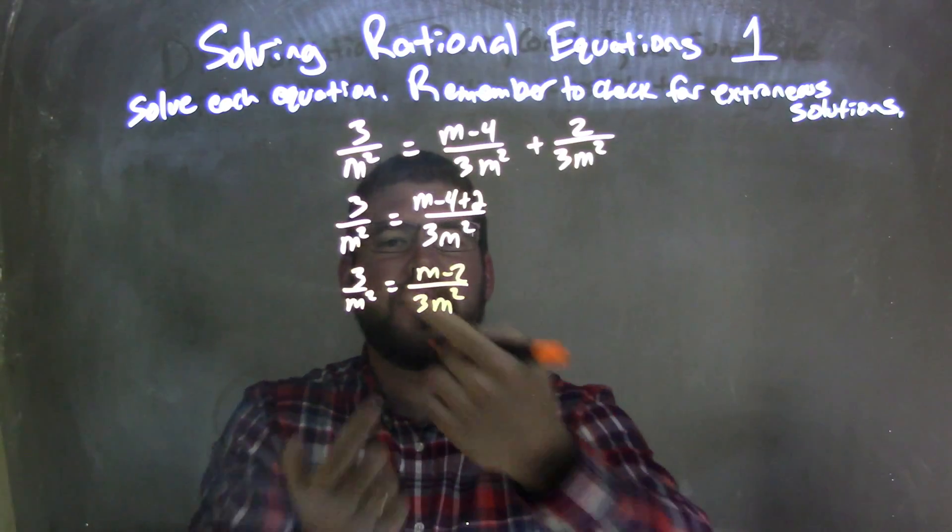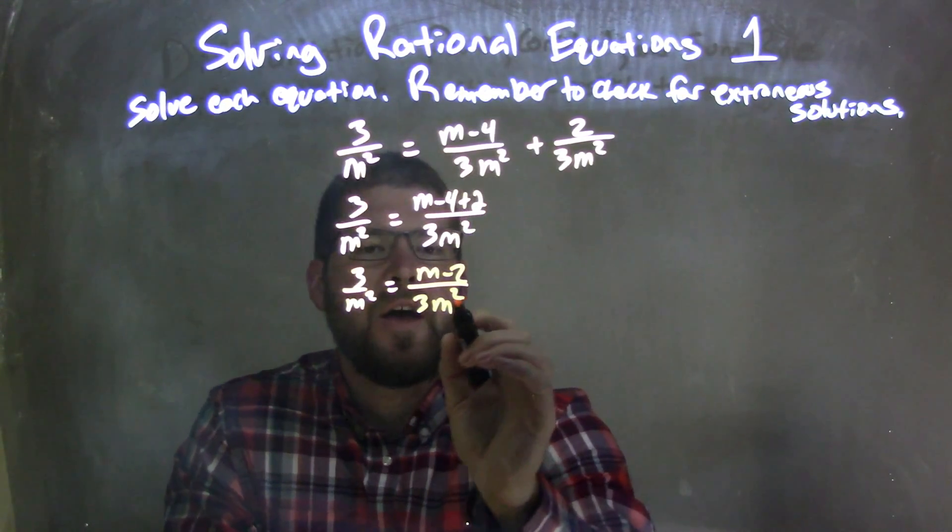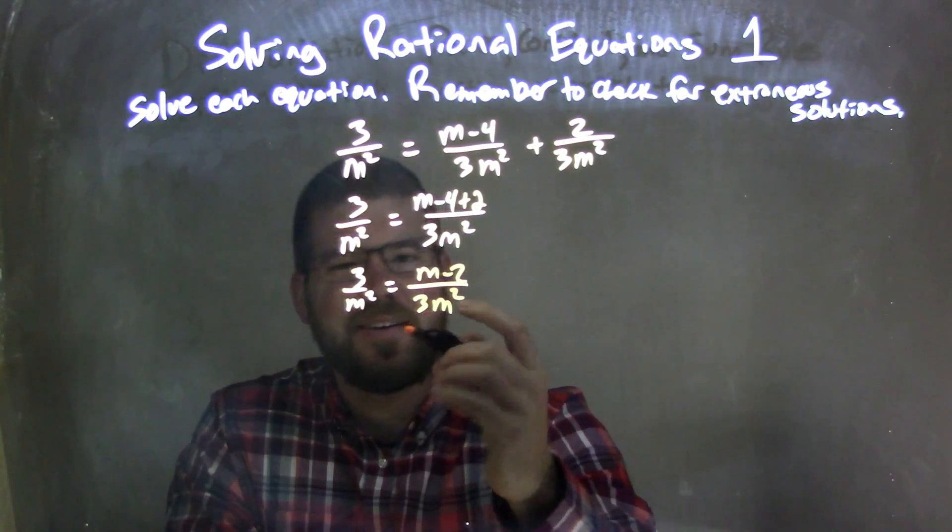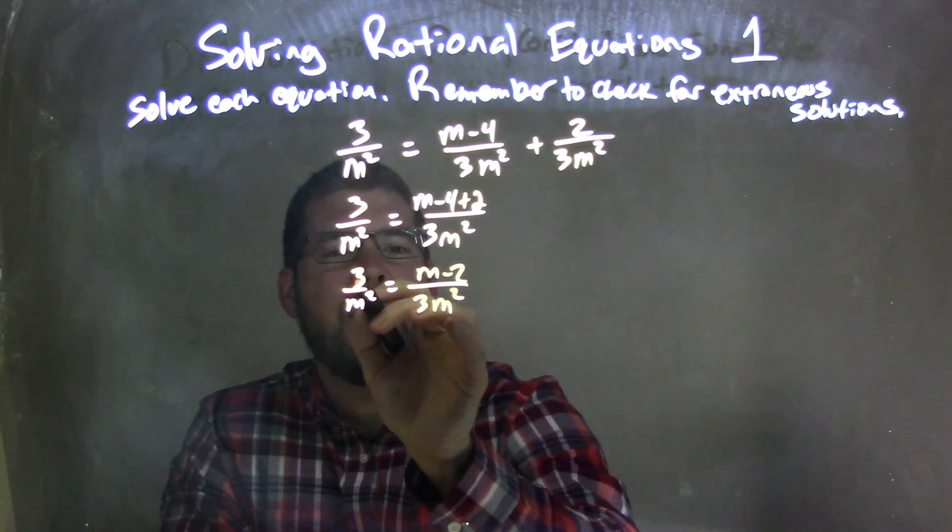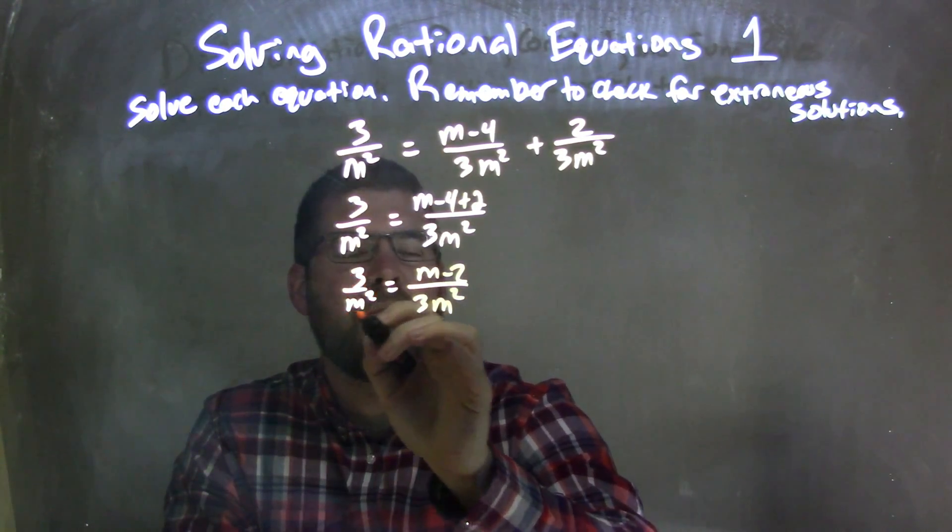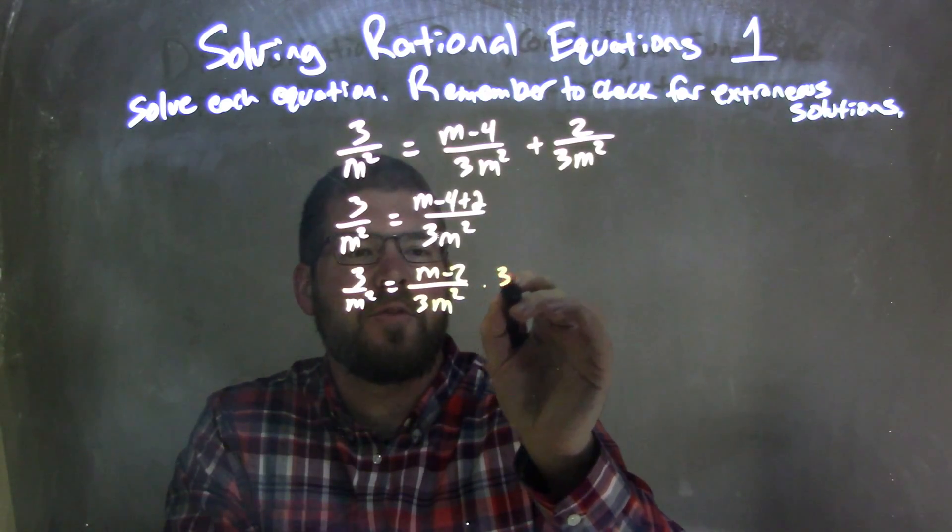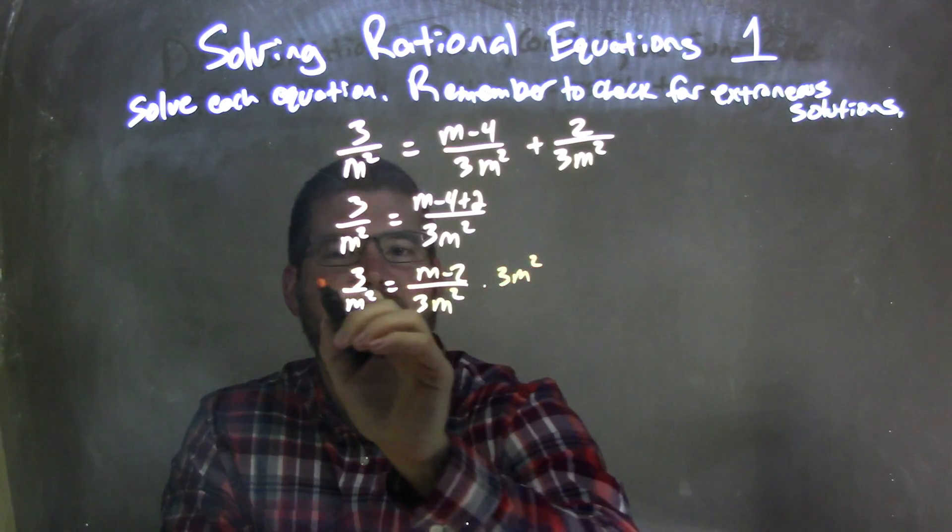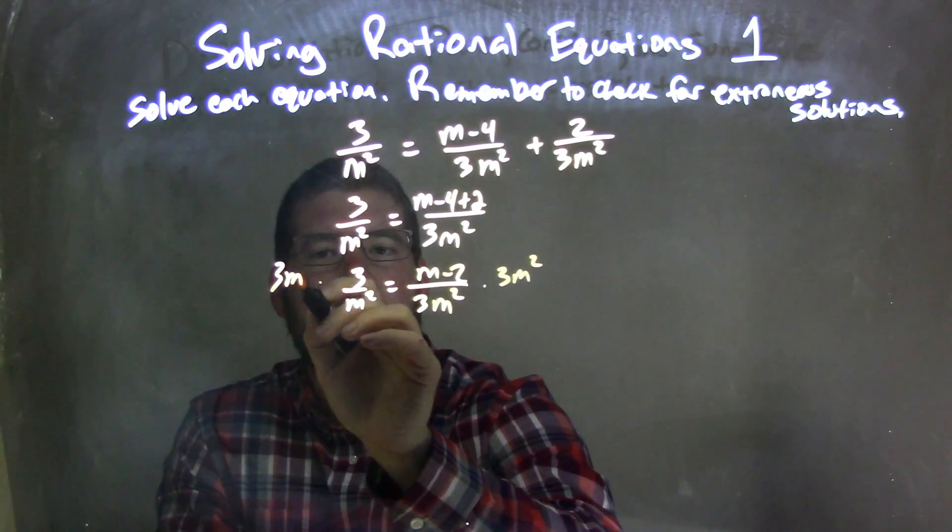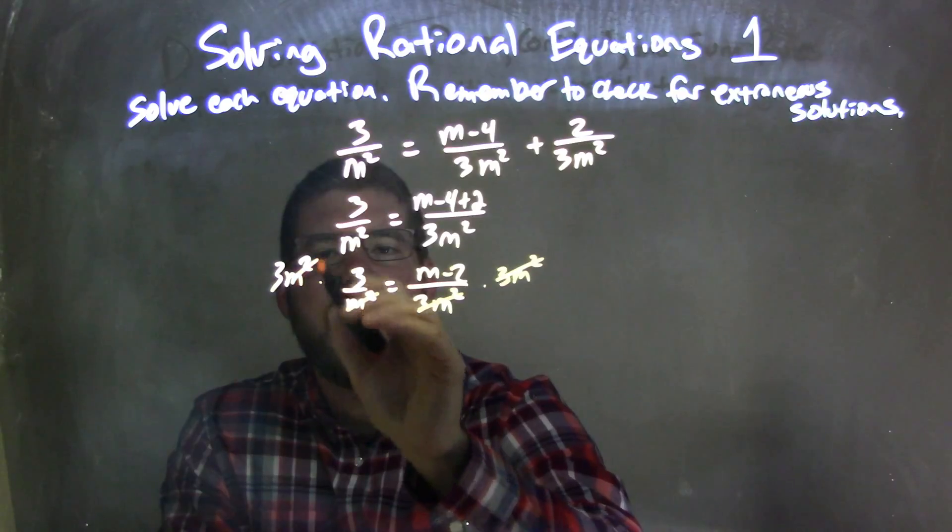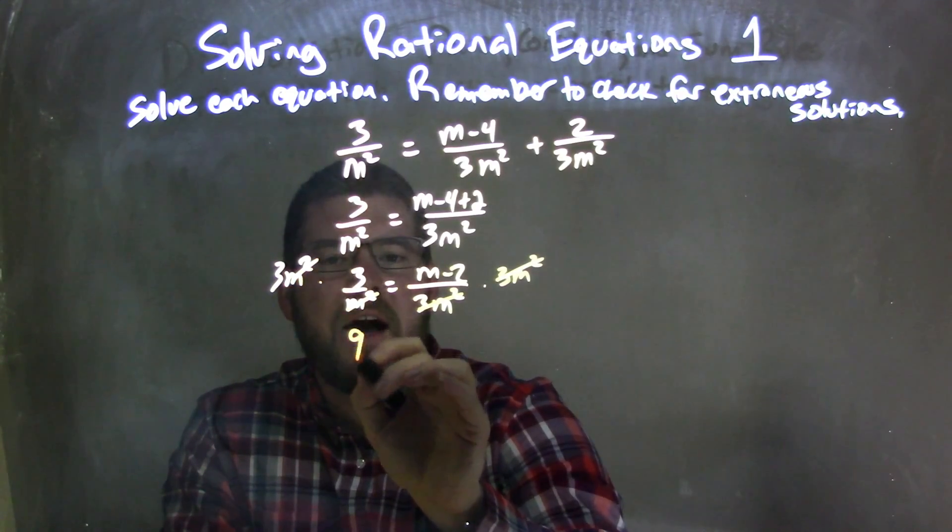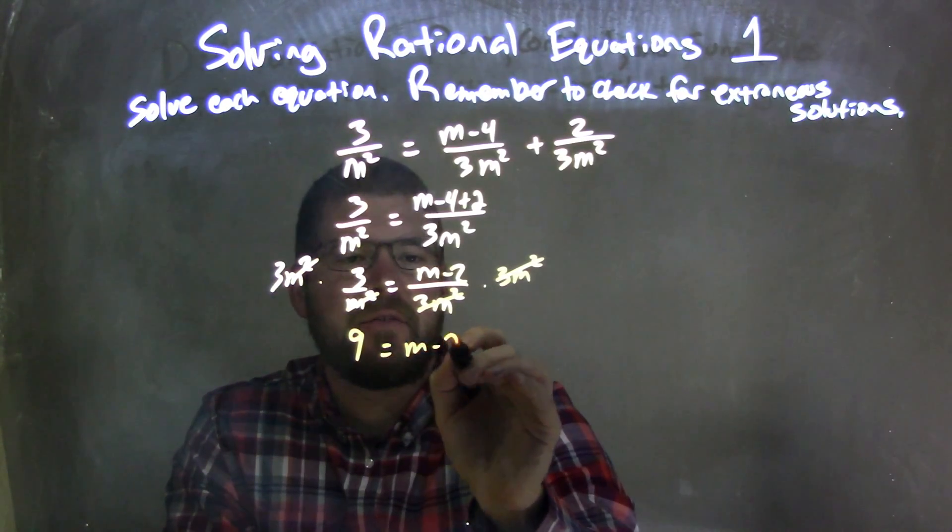What I'm going to do is cross multiply, but in reality I can just multiply. If I multiply 3m squared on both sides here, the m squareds are going to cancel. So I'm going to multiply both sides by 3m squared. That cancels the 3m squareds right there, and then these m squareds will cancel, leaving me with just 9 on the left equals m minus 2.